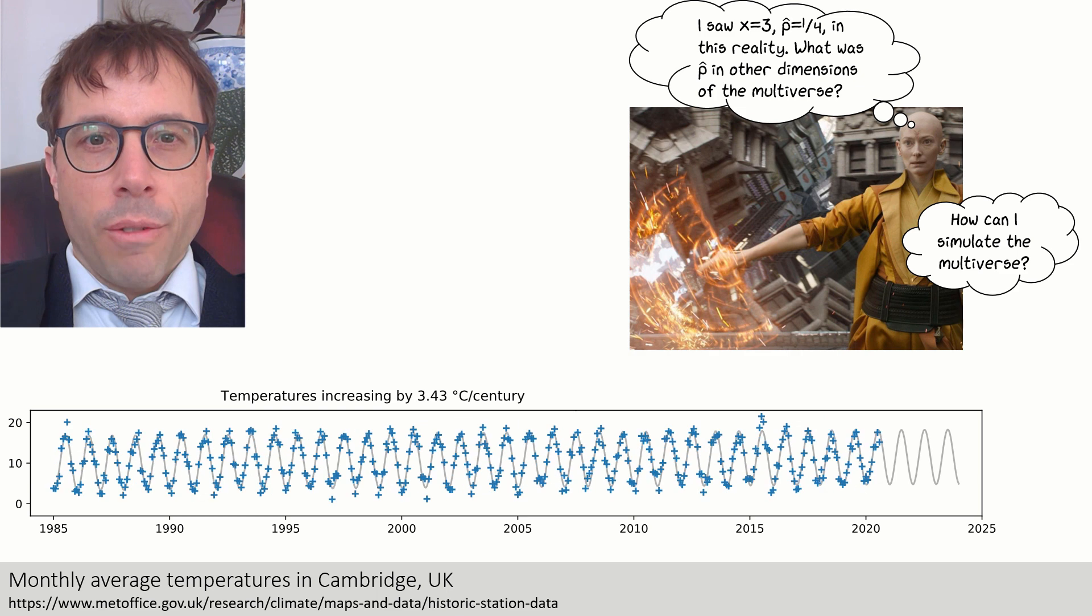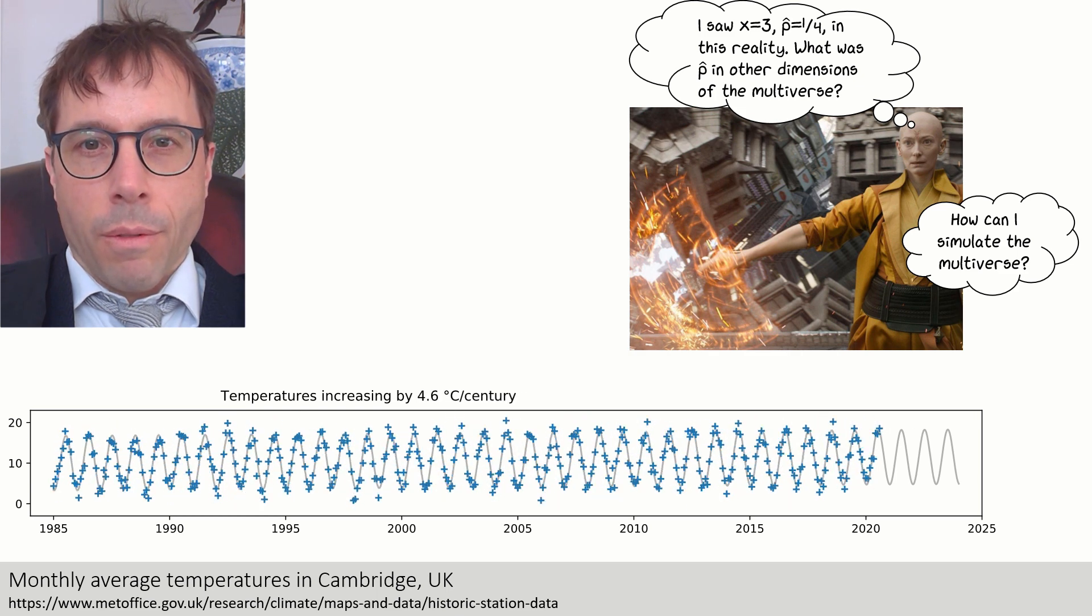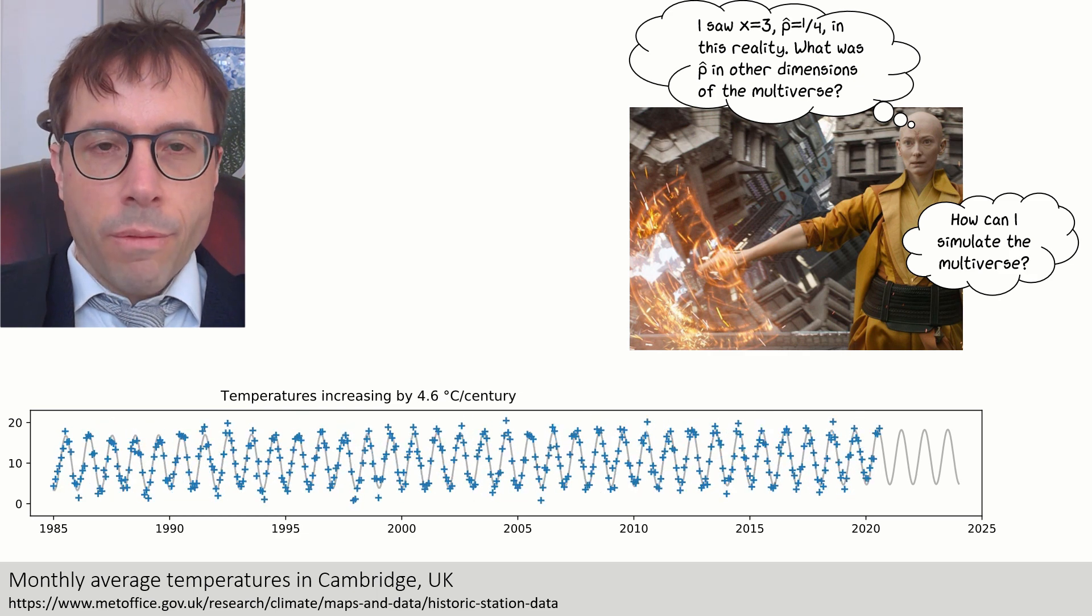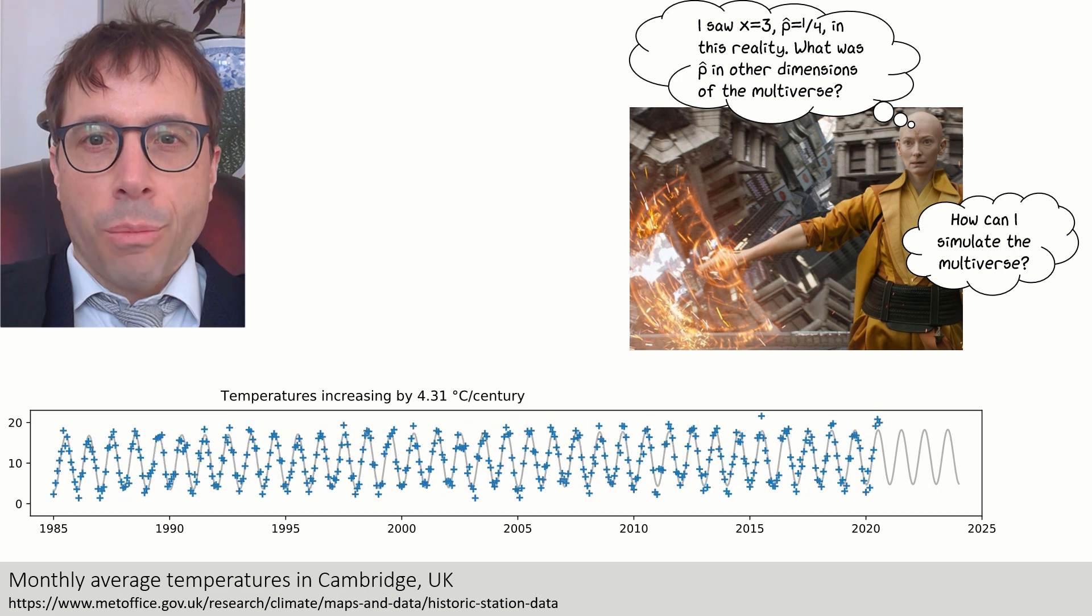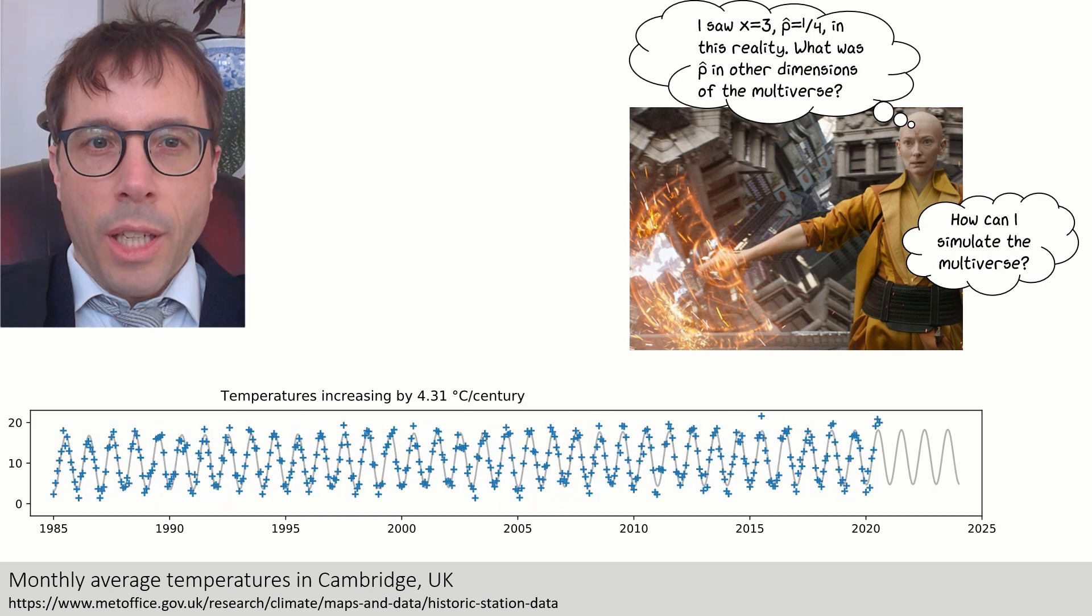For each different simulated data set, we'll get a different readout for the quantity we're interested in. In this case, the rate of temperature increase. We'll look at the spread and take that spread to measure how confident we should be in our answer.